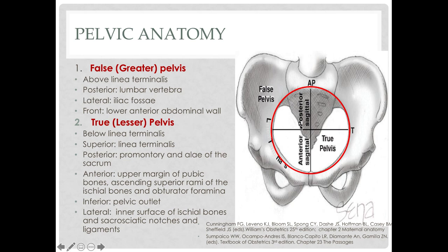Anything below the linea terminalis is what we are really concerned with in obstetrics — this is the true or lesser pelvis. Its borders are: superiorly the linea terminalis; posteriorly the promontory and the alae of the sacrum; anteriorly the upper margin of the pubic bones, ascending superior rami of the ischial bones, and the obturator foramina; inferiorly the pelvic outlet; and laterally the inner surface of the ischial bones and the sacrosiatic notches and ligaments.